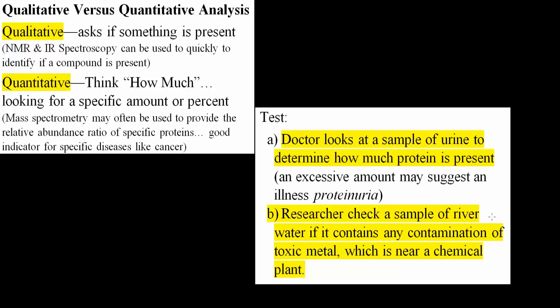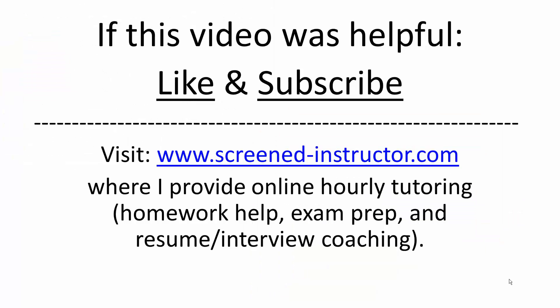The researcher checking a sample of river water is just asking if it contains any toxic metal contamination. So this is a qualitative test, because if it contains any, that might mean there's a leakage in the chemical plant.